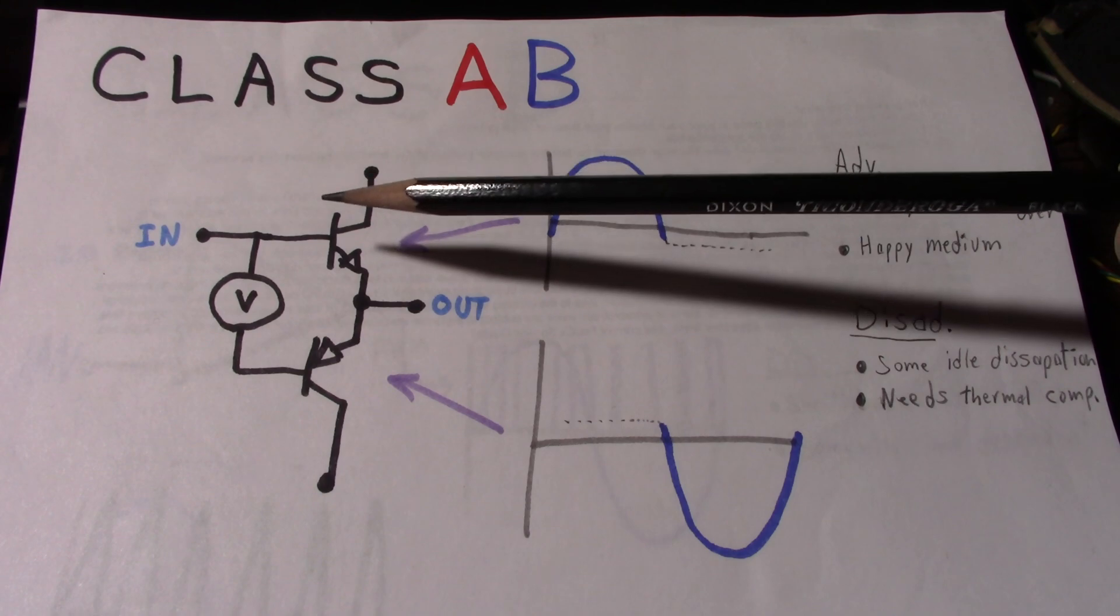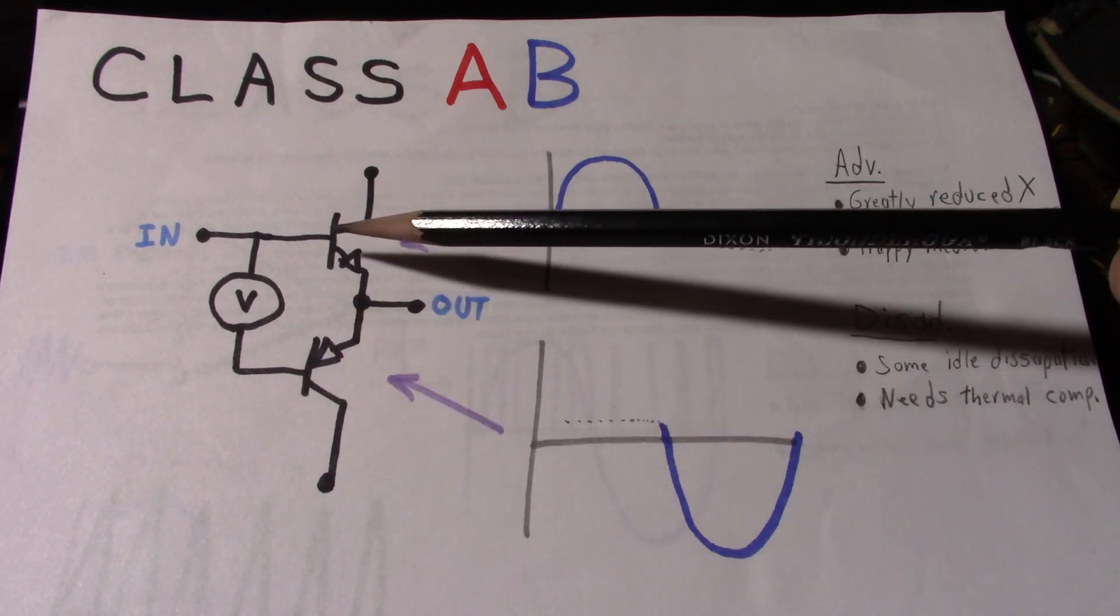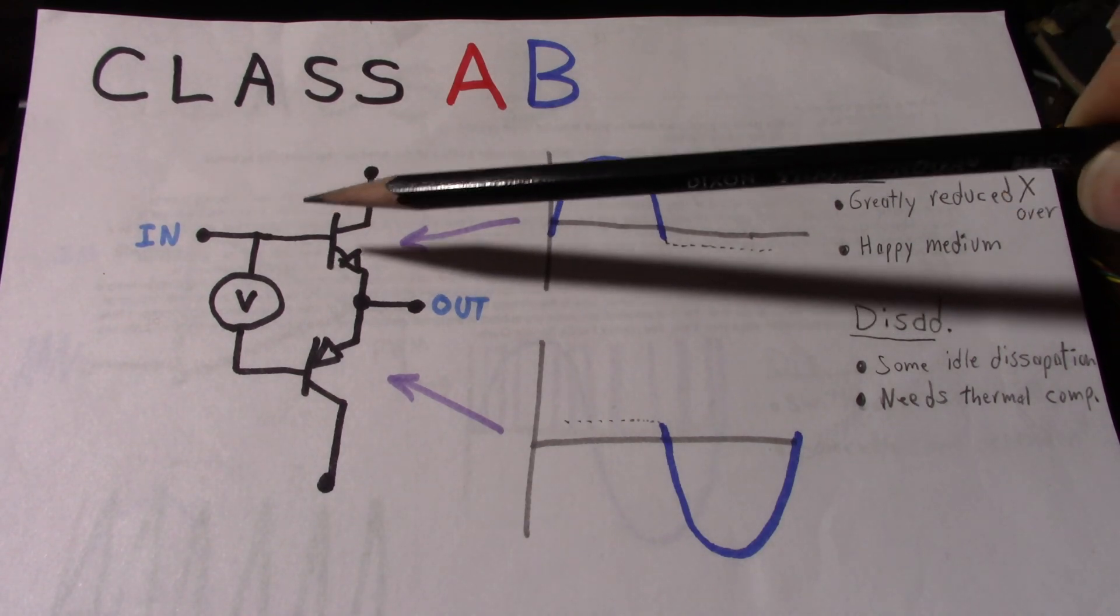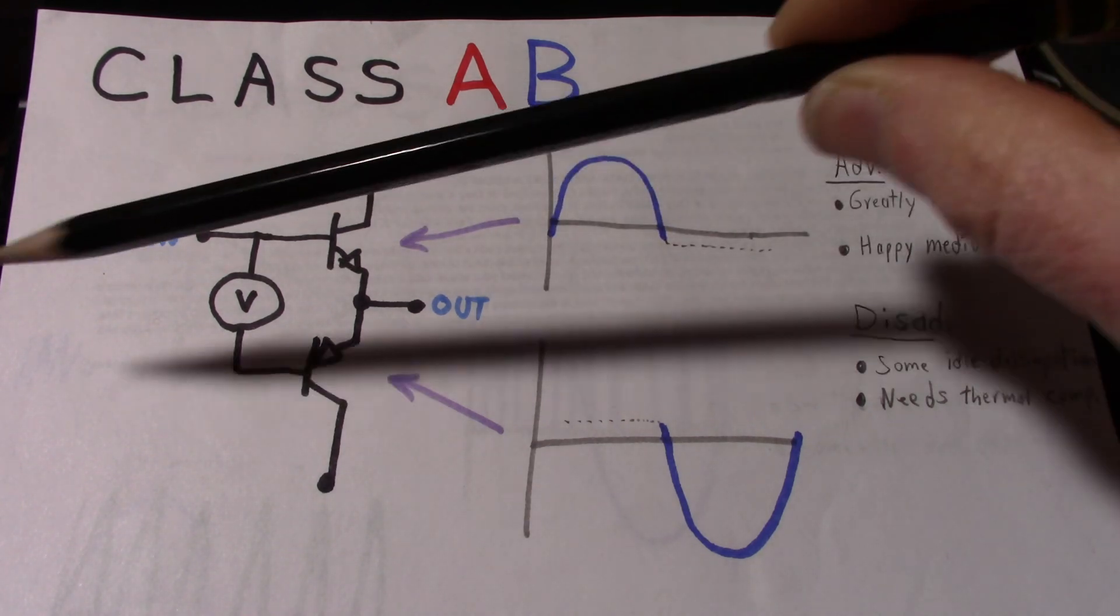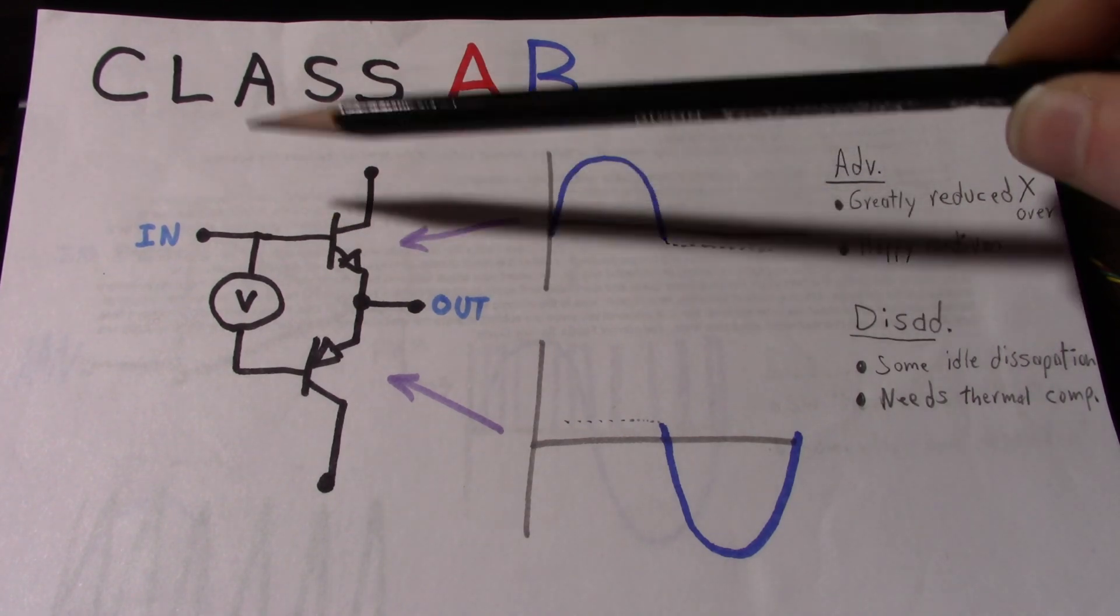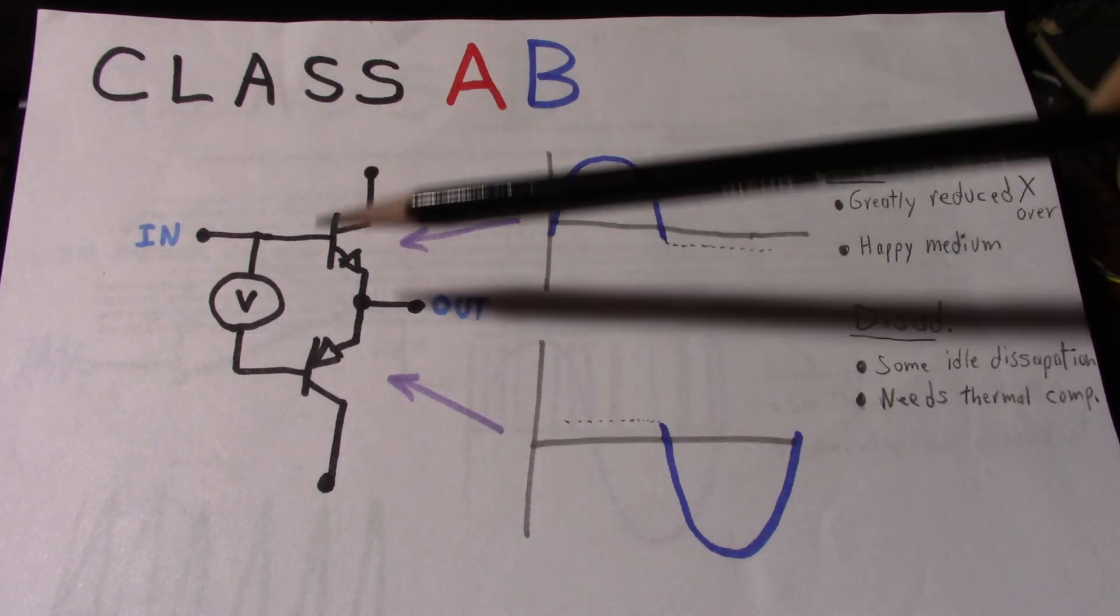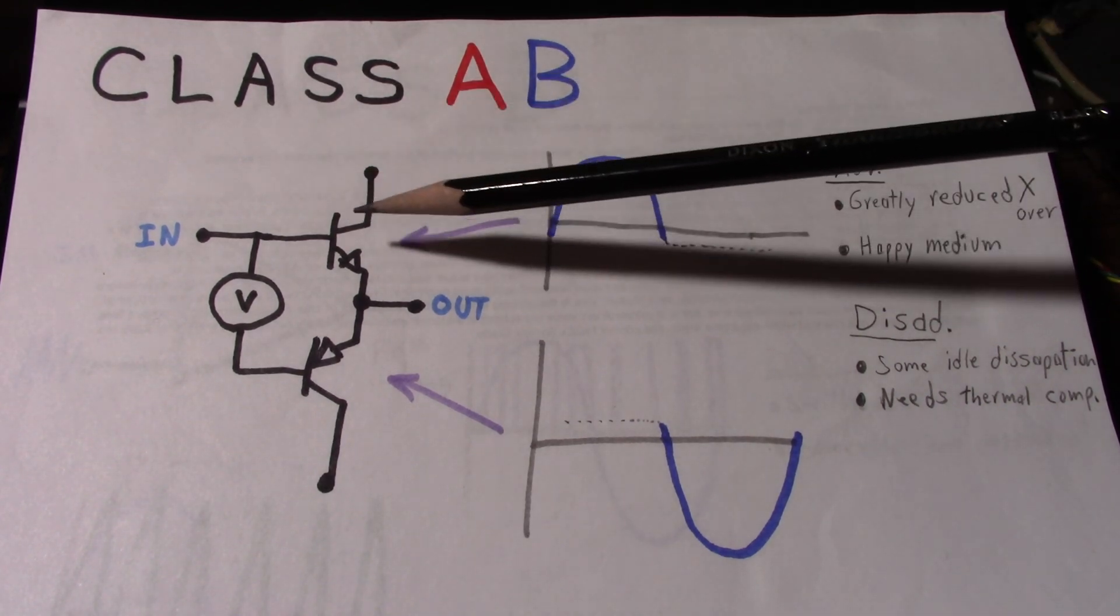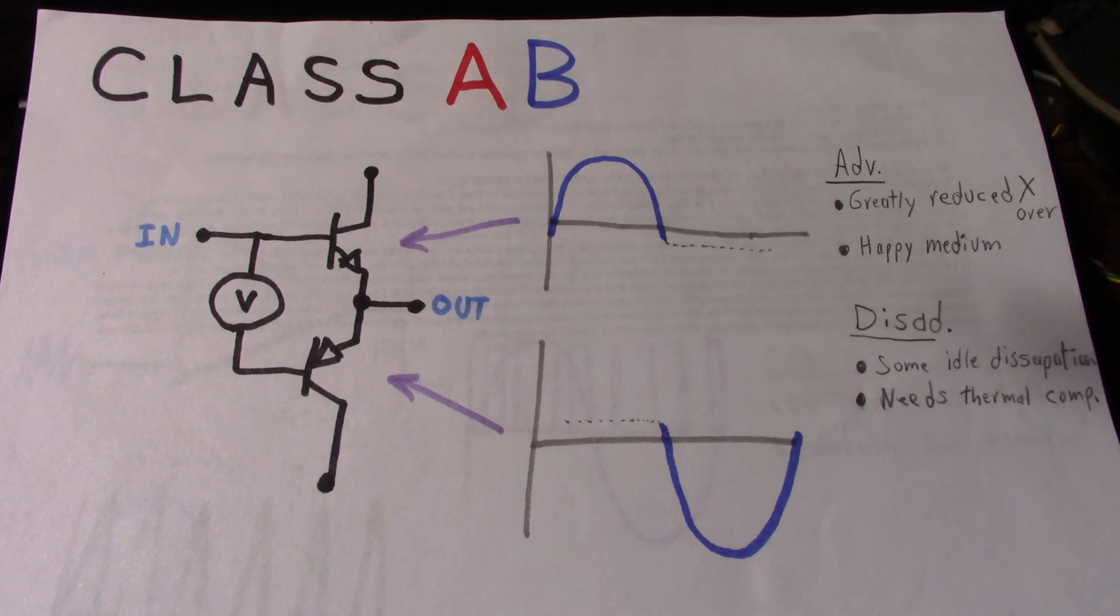So what happens as the transistors are drawing idle current, they're going to warm up. And as they warm up, the gain increases, or another way to look at it, the forward voltage drop from base to emitter decreases, and it starts to draw more current. This becomes a positive feedback cycle, where these transistors just get hotter and hotter until they destroy themselves.